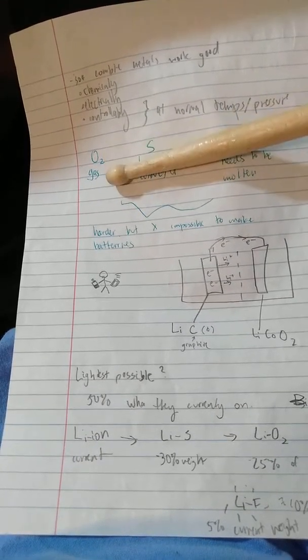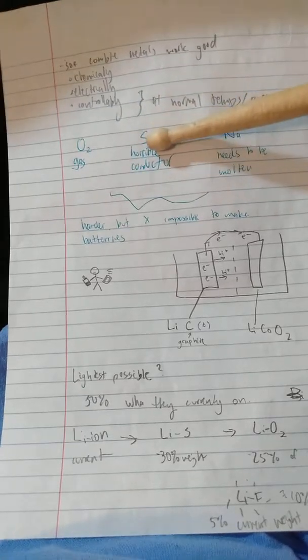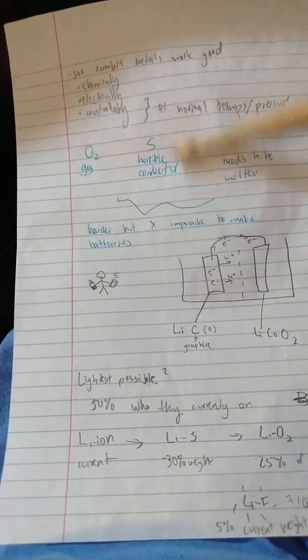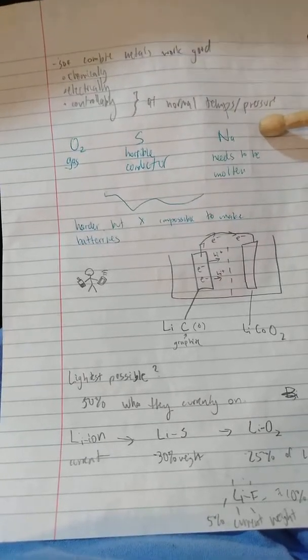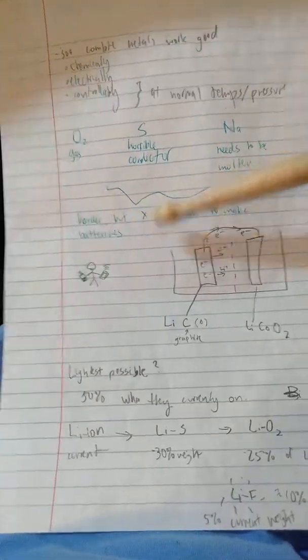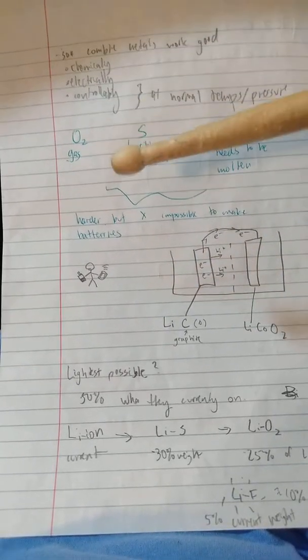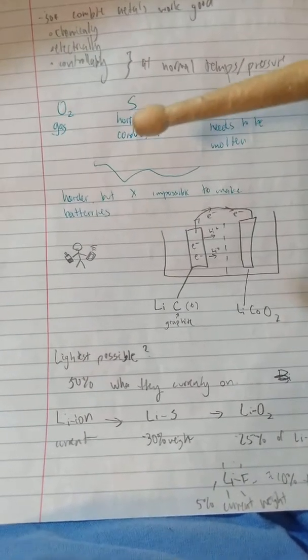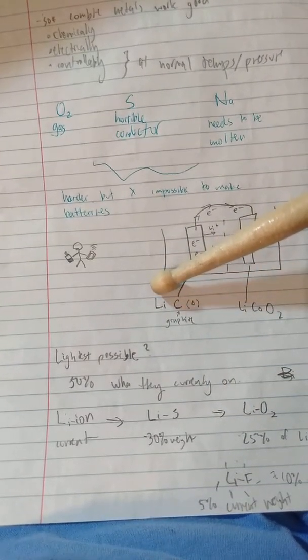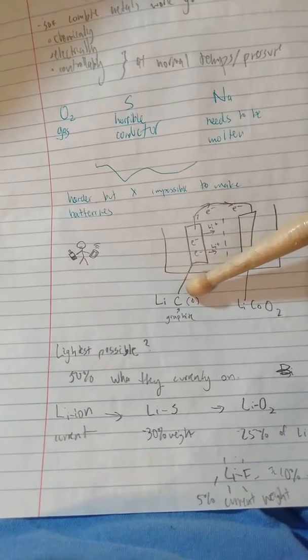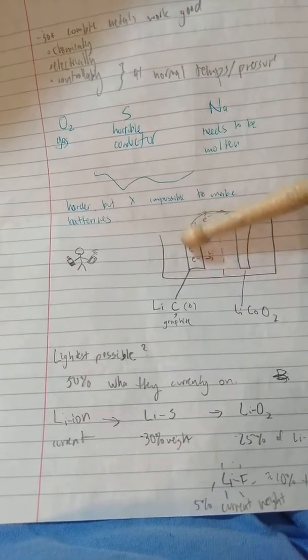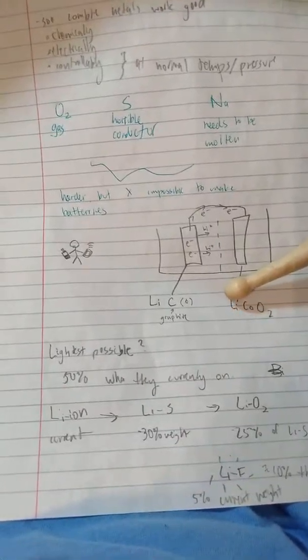Well, oxygen is a gas, so it's harder to use. Sulfur is a horrible conductor, so it doesn't conduct electricity well. Sodium needs to be molten. So they're harder, but not impossible, to make batteries out of.